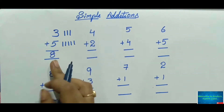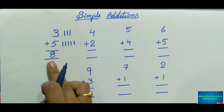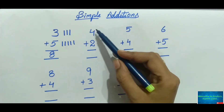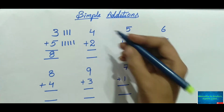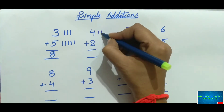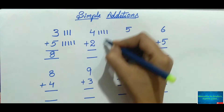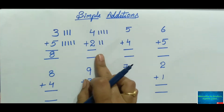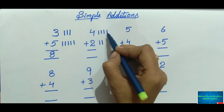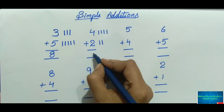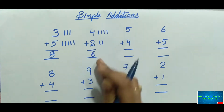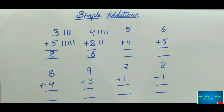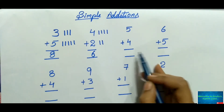Now count all the lines together: one, two, three, four, five, six, seven, eight. The answer is eight, which is called the sum or the total. The second example: four plus two. Draw four lines and two lines, then count together: one, two, three, four, five, six. The sum is six. This is the first method.